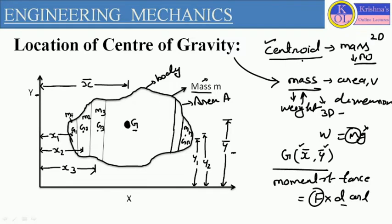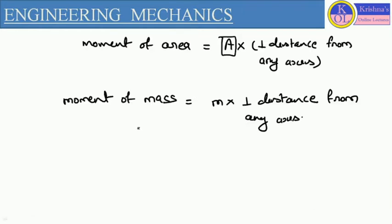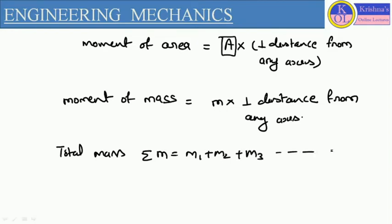Here we are dividing this body into a number of parts. Let us consider these straight lines represent the different parts of this body which has total mass m. For part 1 the mass is m1, for part 2 the mass is m2, for part 3 the mass is m3, for part 4 the mass is m4, and for the nth part the mass will be mn. So the total mass of the body will be summation of m: m1 plus m2 plus m3 up to mn. In centroid we defined area: a1 plus a2 plus a3 up to an, representing summation of area.